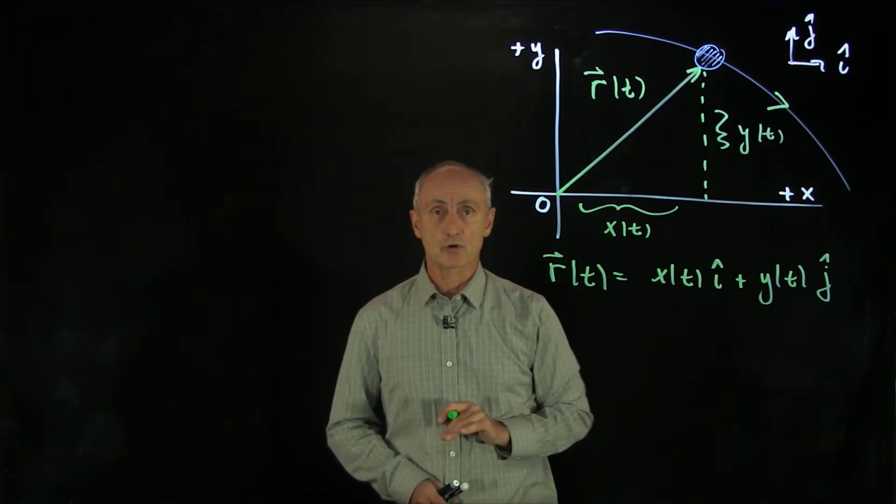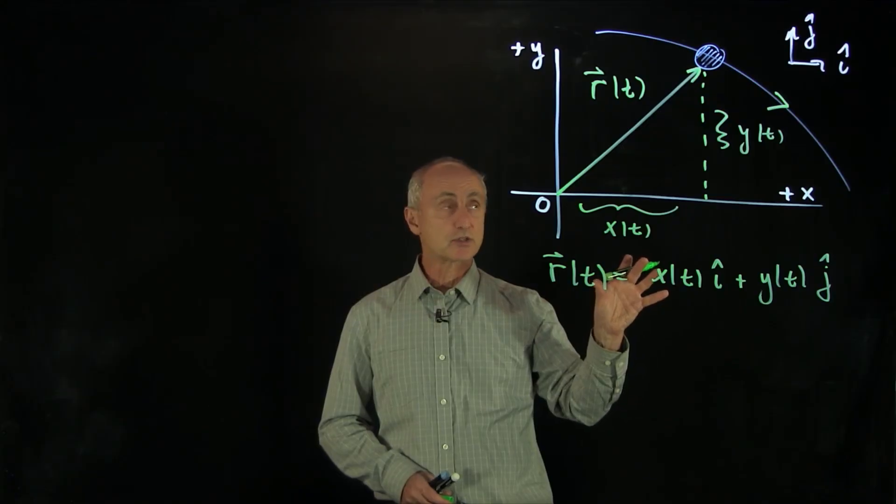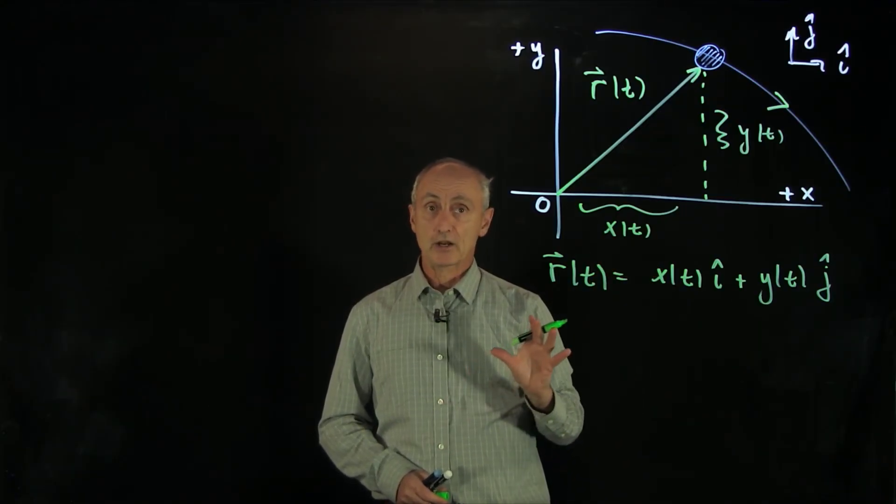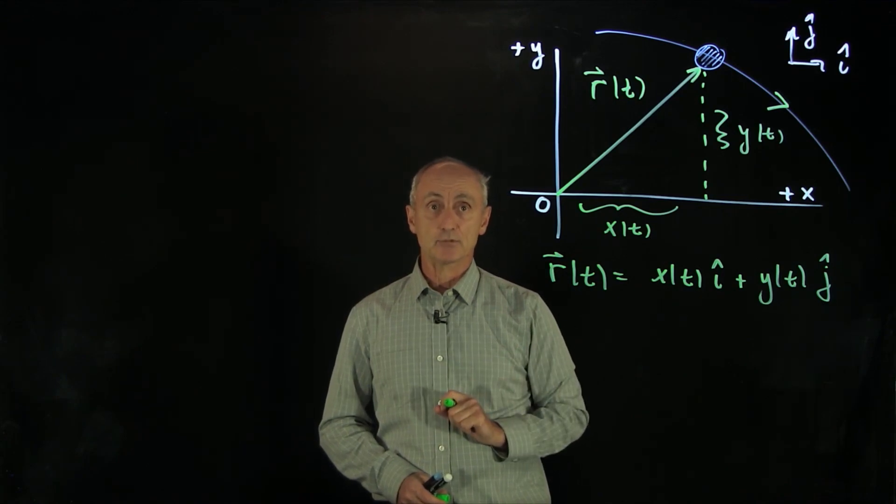So this is how we describe an object in a Cartesian coordinate system undergoing two-dimensional motion. What we want to analyze next is the velocity of that object.